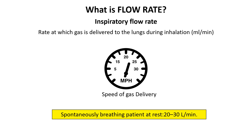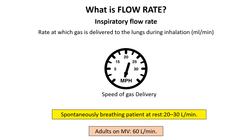For most adult patients receiving mechanical ventilation, the inspiratory flow rate is typically set around 60 liters per minute, but can be adjusted higher or lower based on the patient's individual needs and clinical presentation.